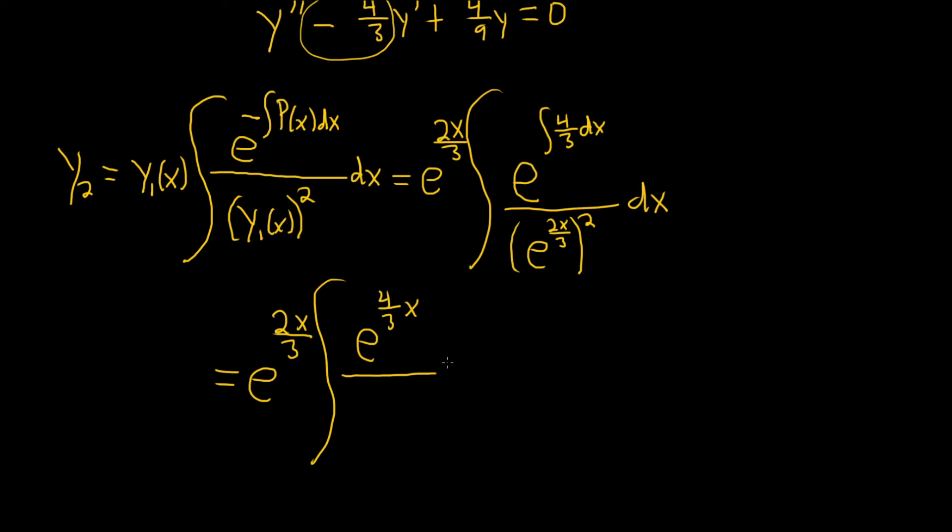Then on the bottom, properties of exponents say you multiply. So 2 times 2x is 4x. So you get e to the 4x over 3 dx. Oh, look, these are the same. Boom.